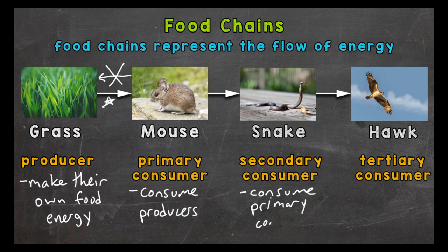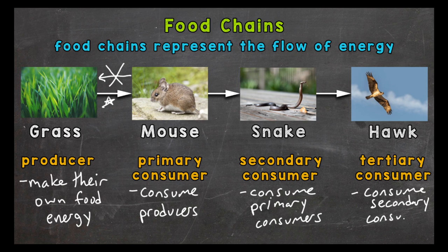And lastly we have a tertiary consumer, which means the third level consumer. The hawk comes along and consumes the snake, and therefore the energy from the snake is transferred to the hawk. The hawk is at the top of this food chain and has no natural predators within this ecosystem, so it would also be called an apex predator.